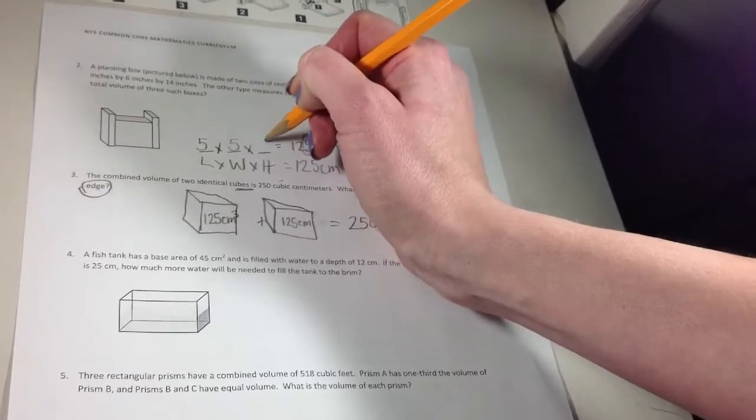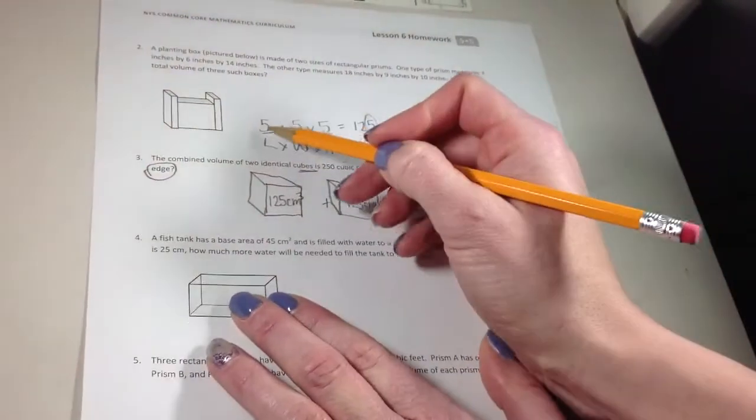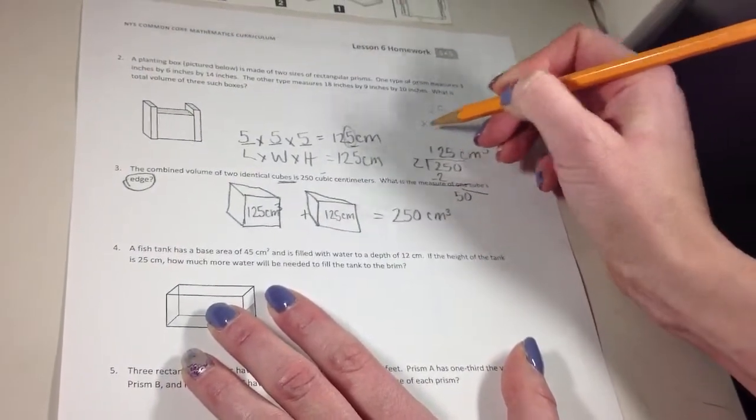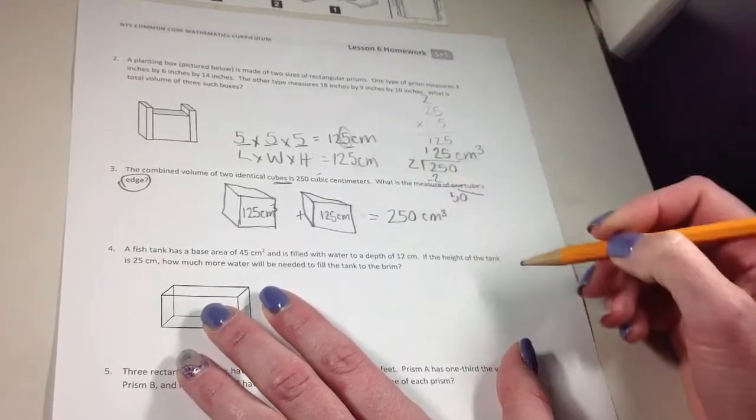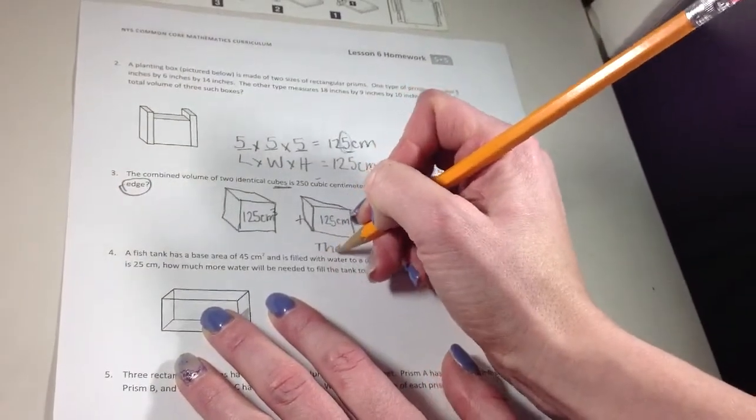5 times 5 times 5. Let's try it and see if we get 125 centimeters. 5 times 5 is 25. Times 5 more is 125. So the missing side, the measure of one of the sides, would be 5 centimeters.